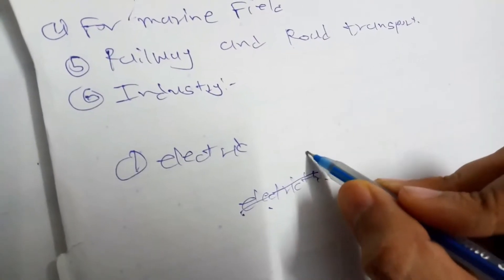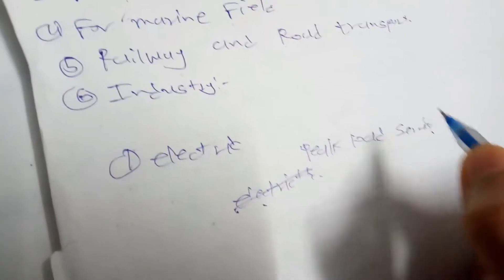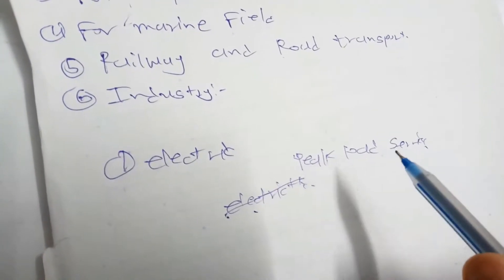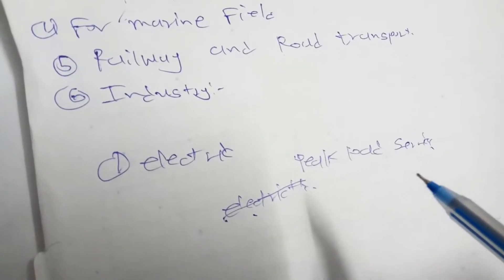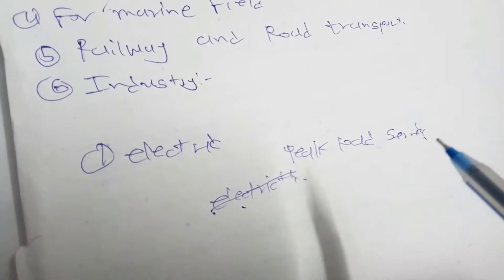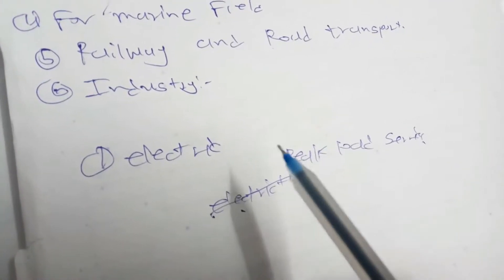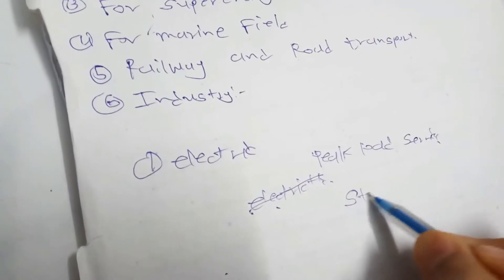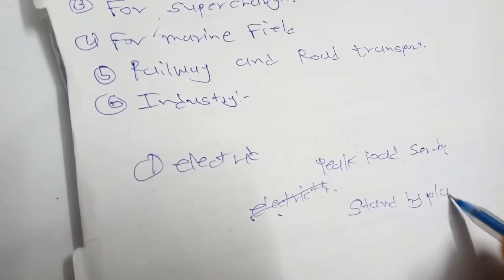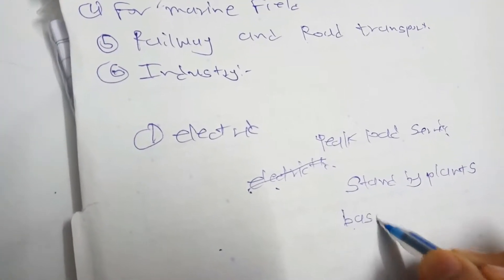The majority of gas turbines are used for peak load services. However, a gas turbine cannot be used alone for peak load services — it is used along with other turbines such as steam turbines and hydro turbines. The second use is as a standby turbine for standby plants, and the third one is for basic load plants.